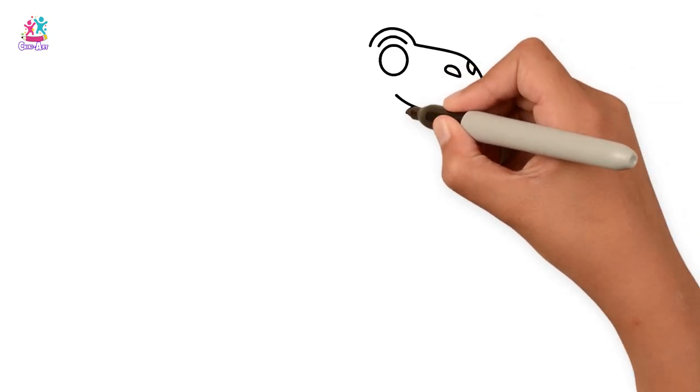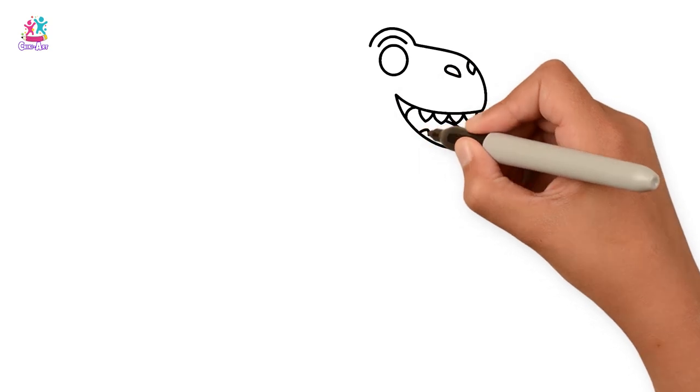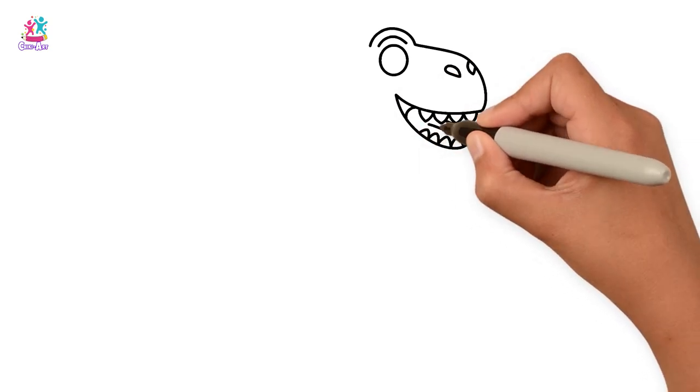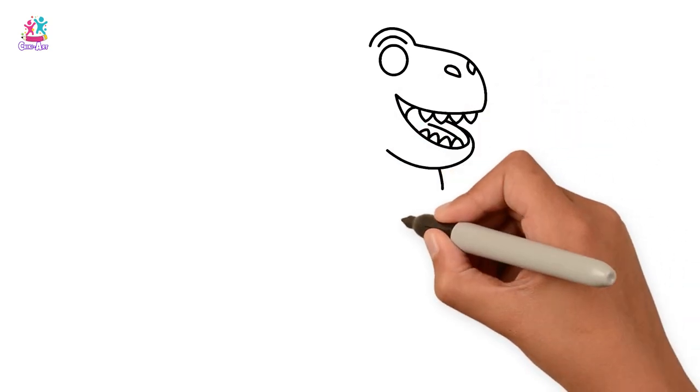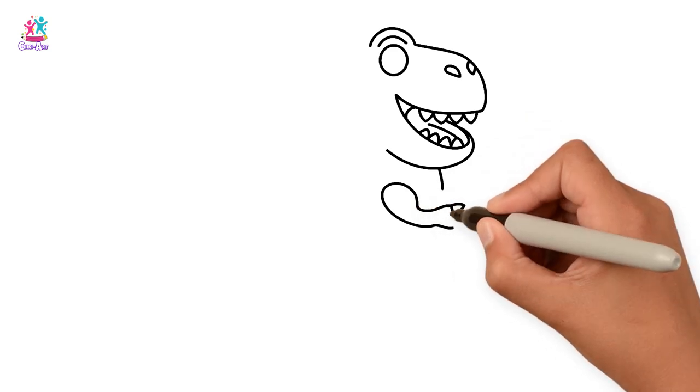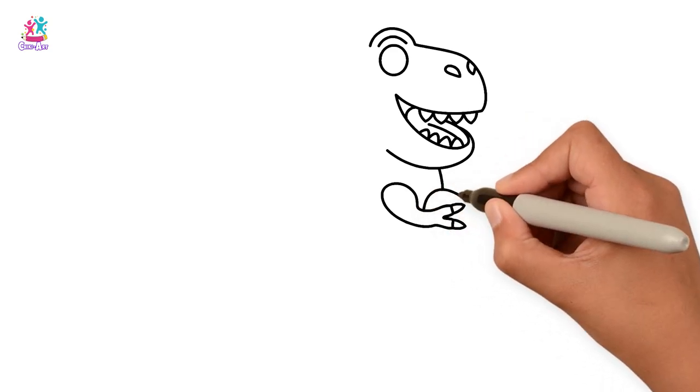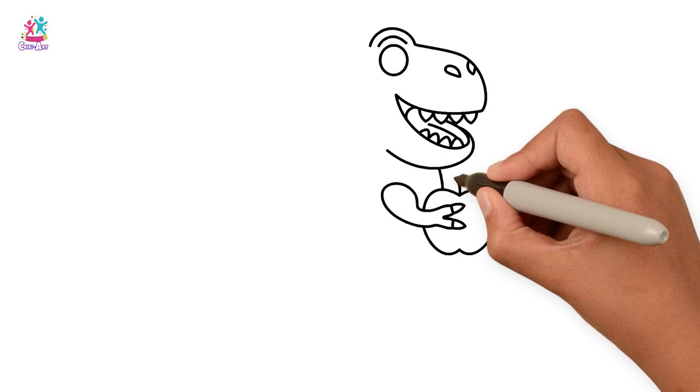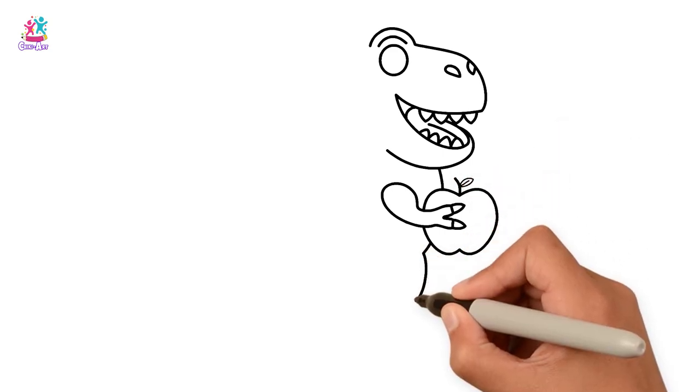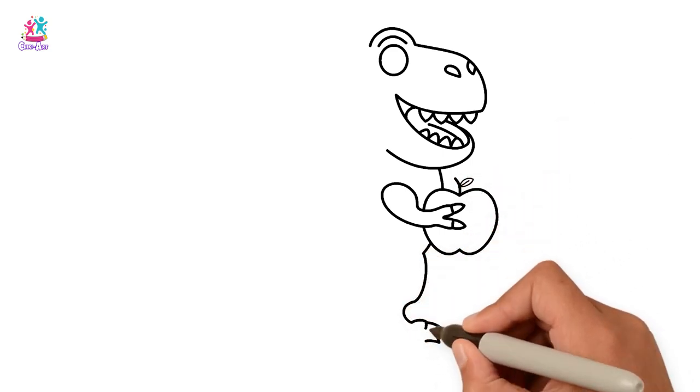Let's start with the head. His big mouth and sharp teeth. I can see his tongue. Can you see it too? He is holding something in his hands. What is it? Oh, it's an apple.